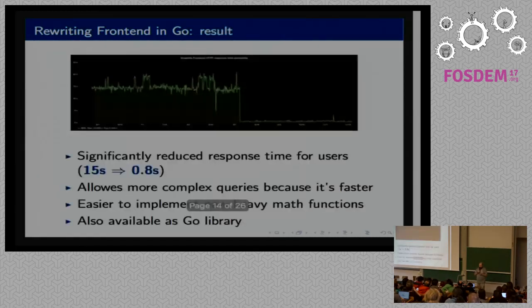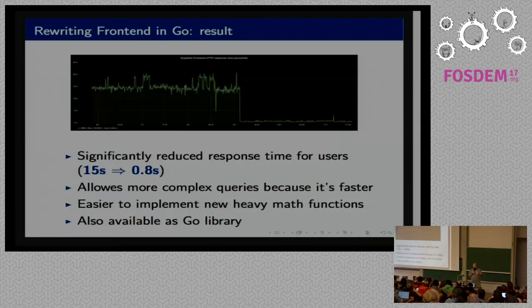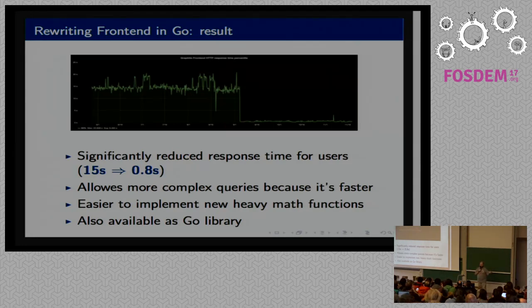In the end, we started also writing our own implementation of Graphite Web in Go called Carbon API. That allowed us to serve really a lot of requests. One of the significant pros of switching to Carbon API was that our average response time on the same amount of machines reduced from around 15 seconds, it was average, to around less than one second. Because it was much faster than Graphite Web for our cases, it also allowed us to do more complex queries. We actually started to encourage developers and other admins to do aggregations afterwards.